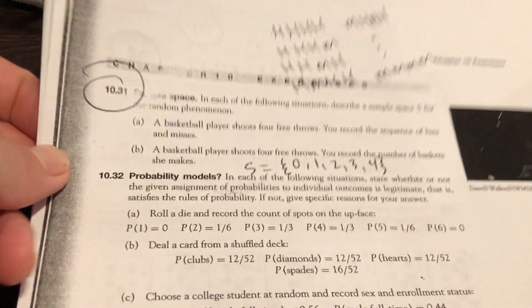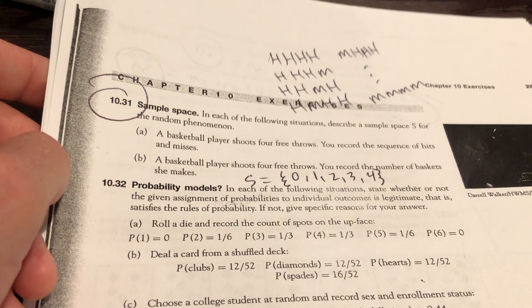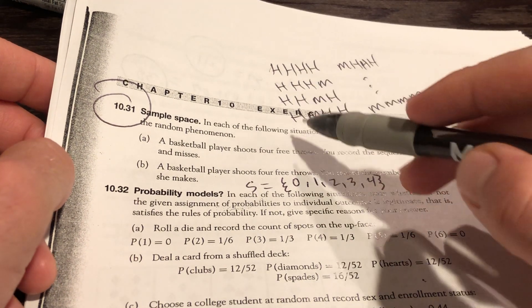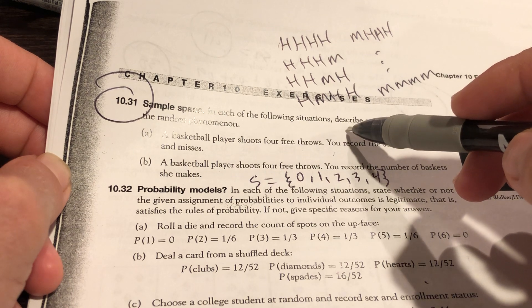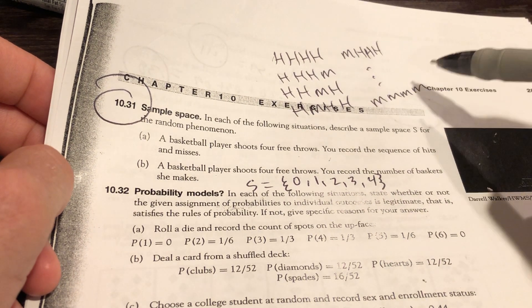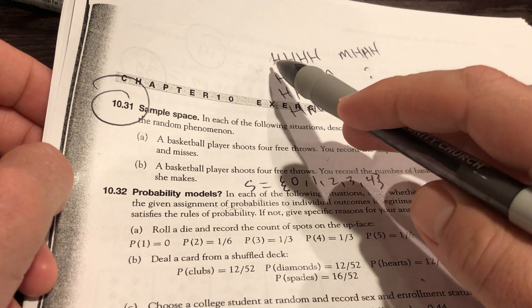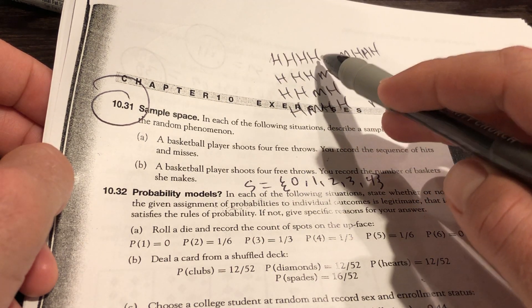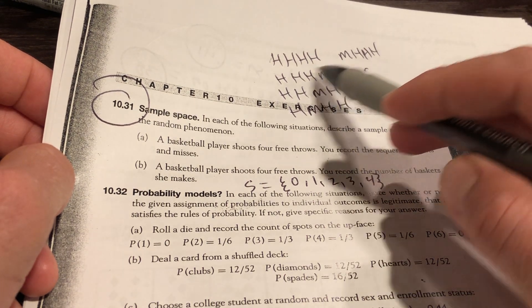On 10.31 here, part A, you record the number of hits and misses. You either make it or you don't. 2 to the 4th, because you're shooting 4, it's 16. There's 16 different outcomes. We'll talk about this when we flip the coin, heads or tails. So you could have a hit, hit, hit, hit. You make all four of them.